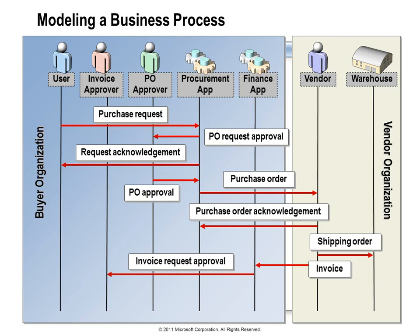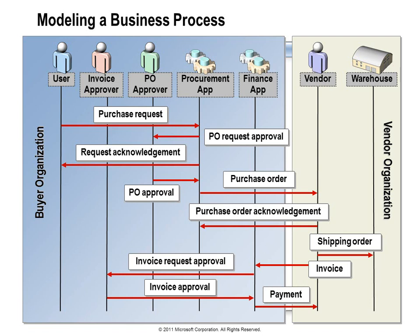Eventually our manager approves the invoice and sends that message back to the finance app. Our user might not even be able to determine the status of the order at this point — if they don't have access to the finance system, they can only see what the procurement system has available. We also can't ask any single system how long it has taken to process this order. Our finance system delivers a payment to the vendor, and the process continues to the point where the user actually receives the material they ordered.